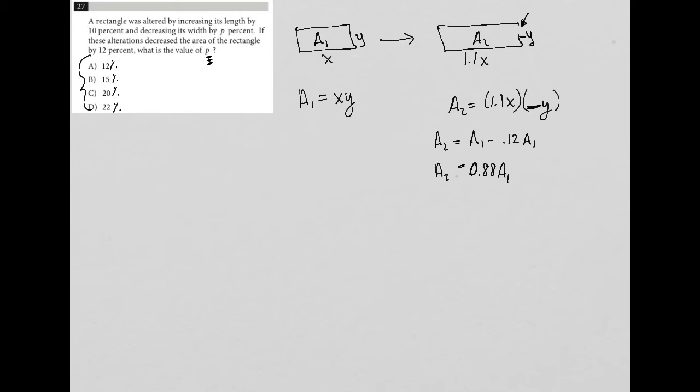So how do I put all this together? Really, I'm going to use this equation here. So A2 is that. So I'm going to just replace A2 with 1.1x times blank y. And I still have my 0.88. And A1 is really this, xy. So I'm going to replace A1 with xy.